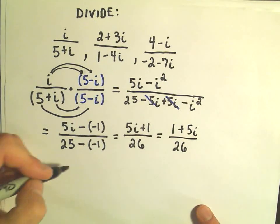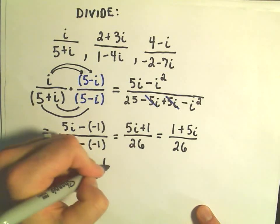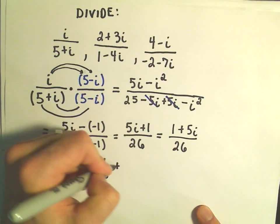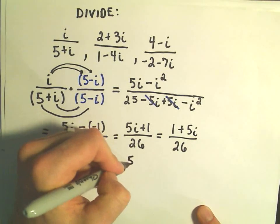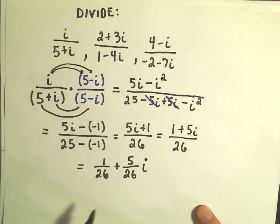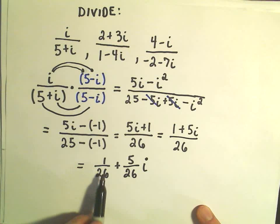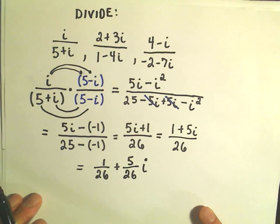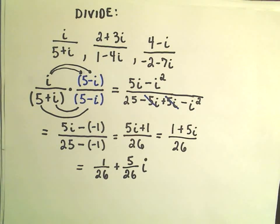And now, typically, you'll write - I'm going to break up my fraction - 1 over 26 plus 5 over 26. I'm just going to pull the i out to the side. If I could, I would reduce these if at all possible, but there's not really much to do here.